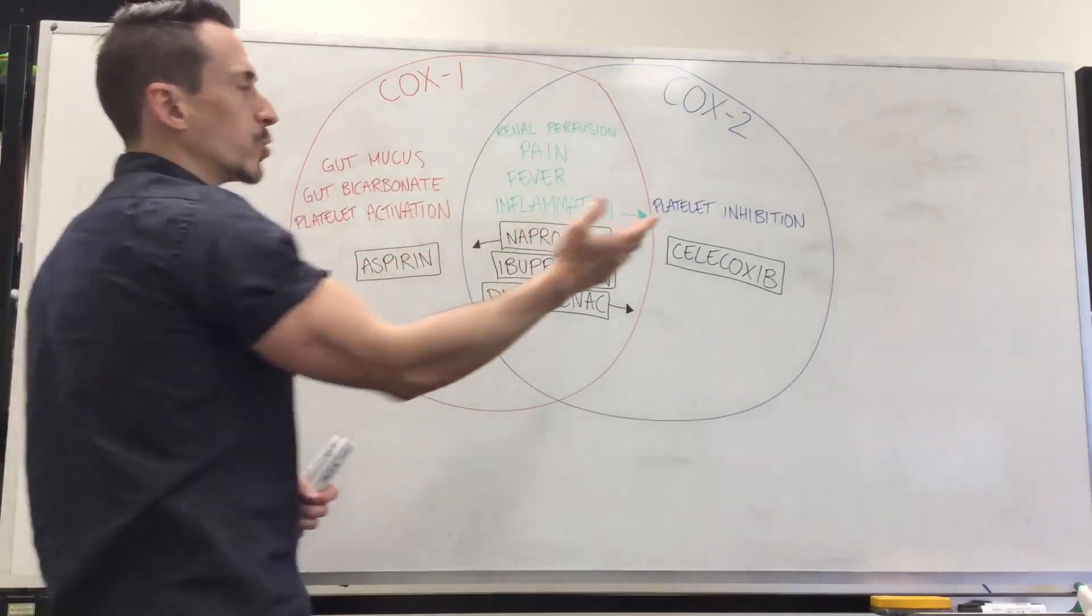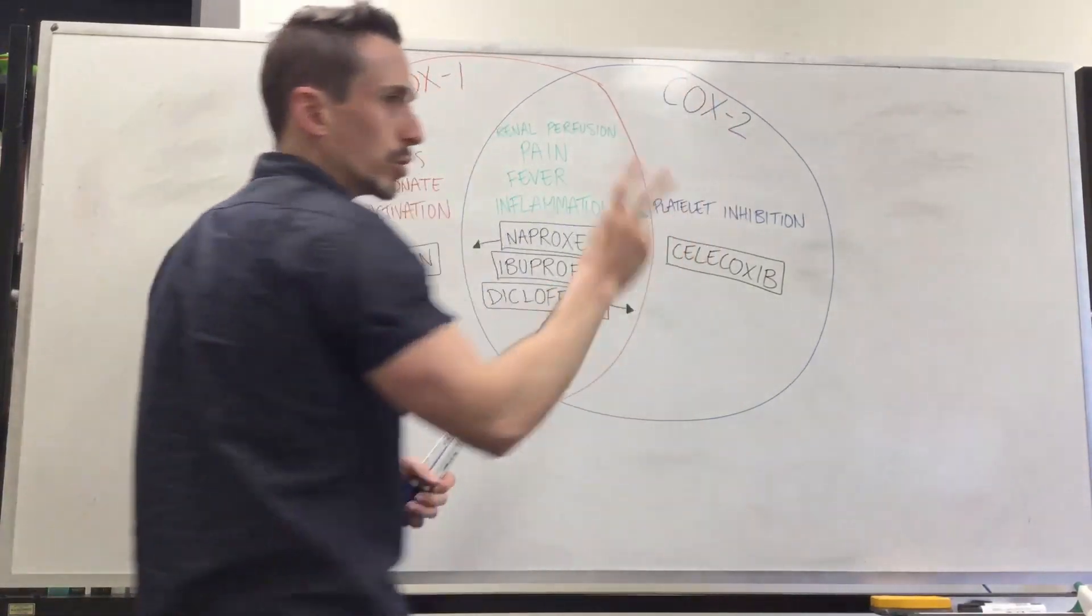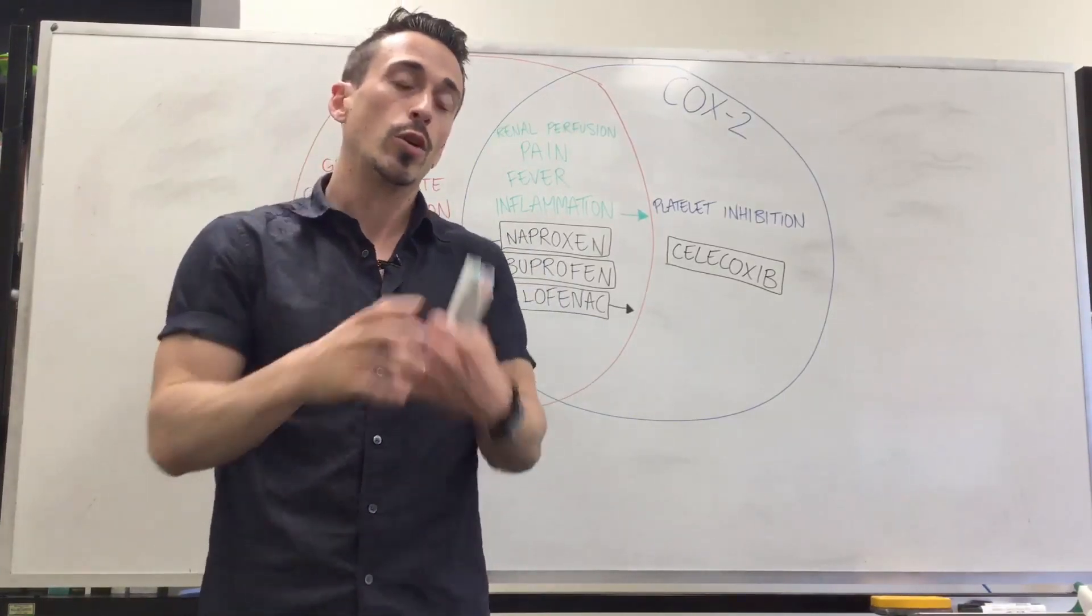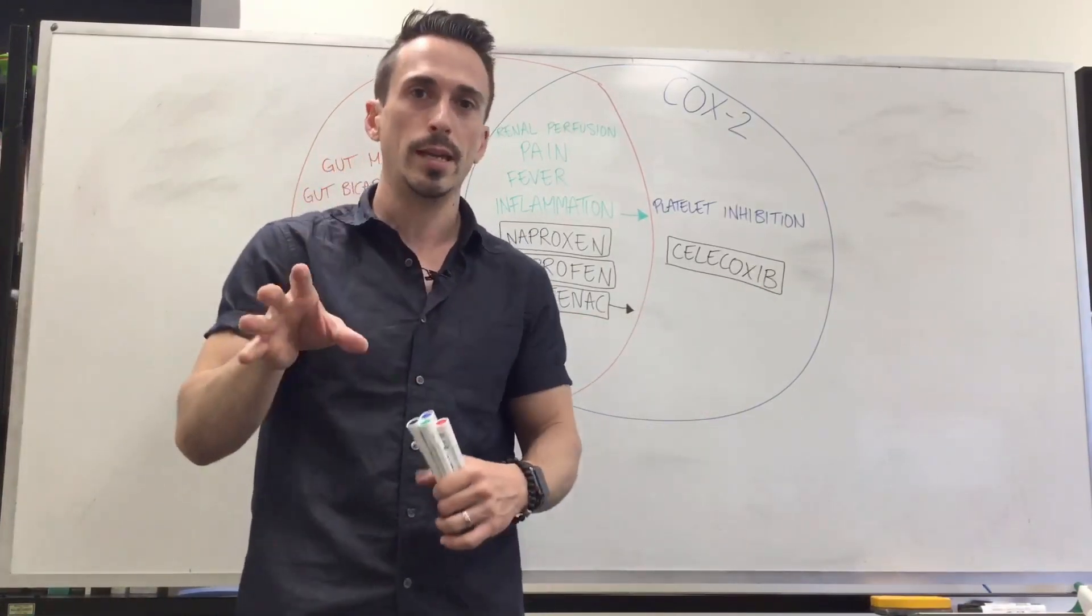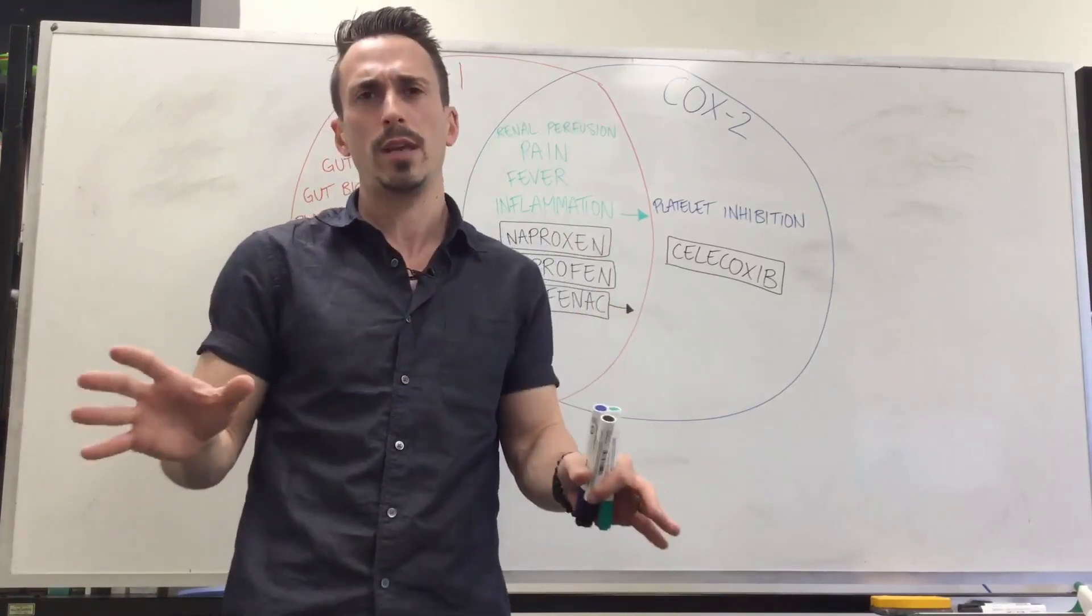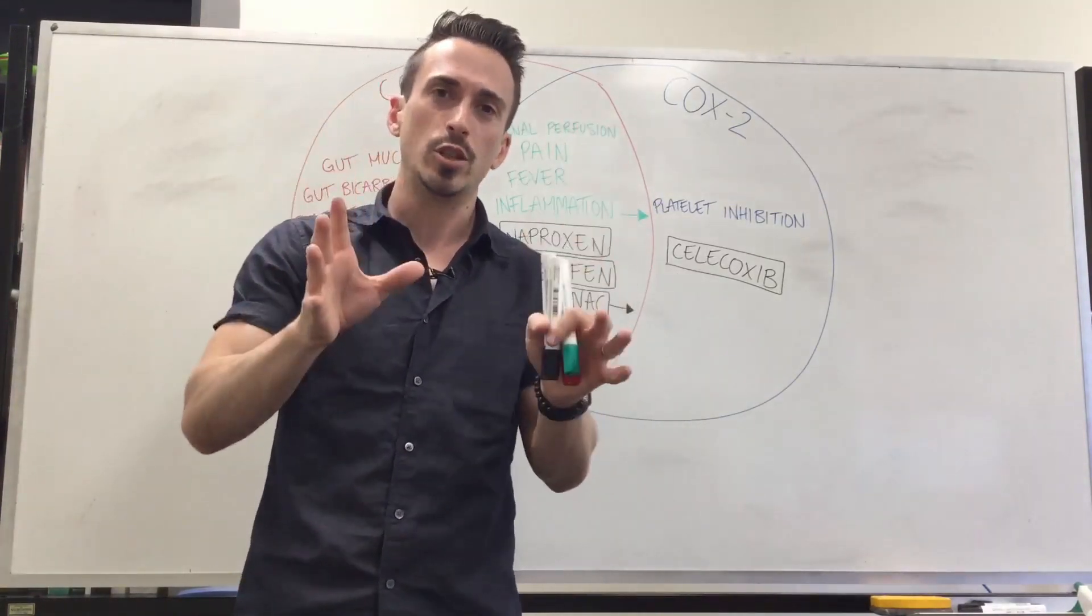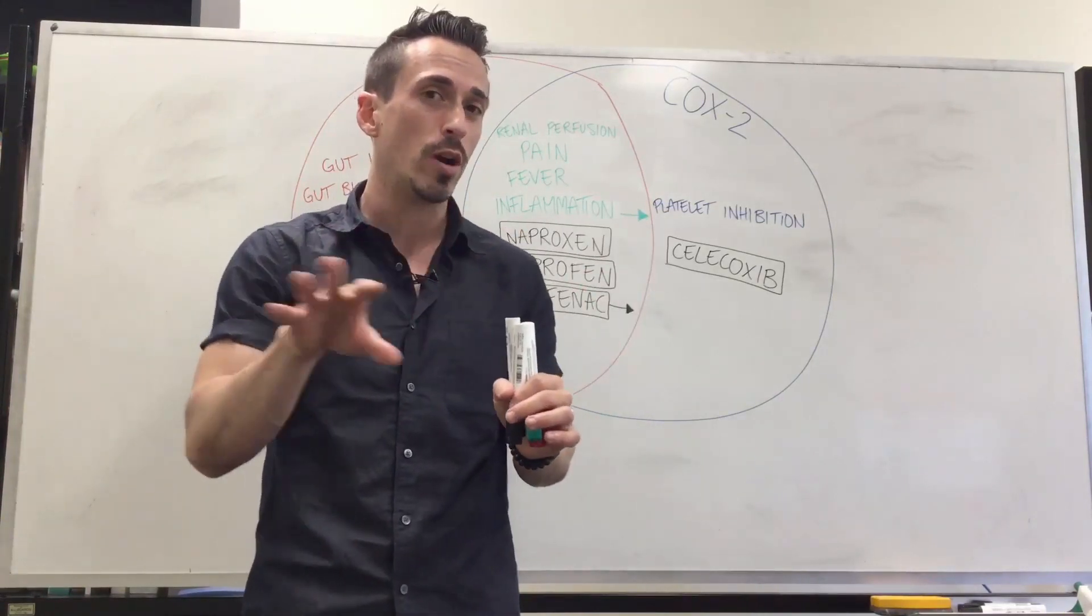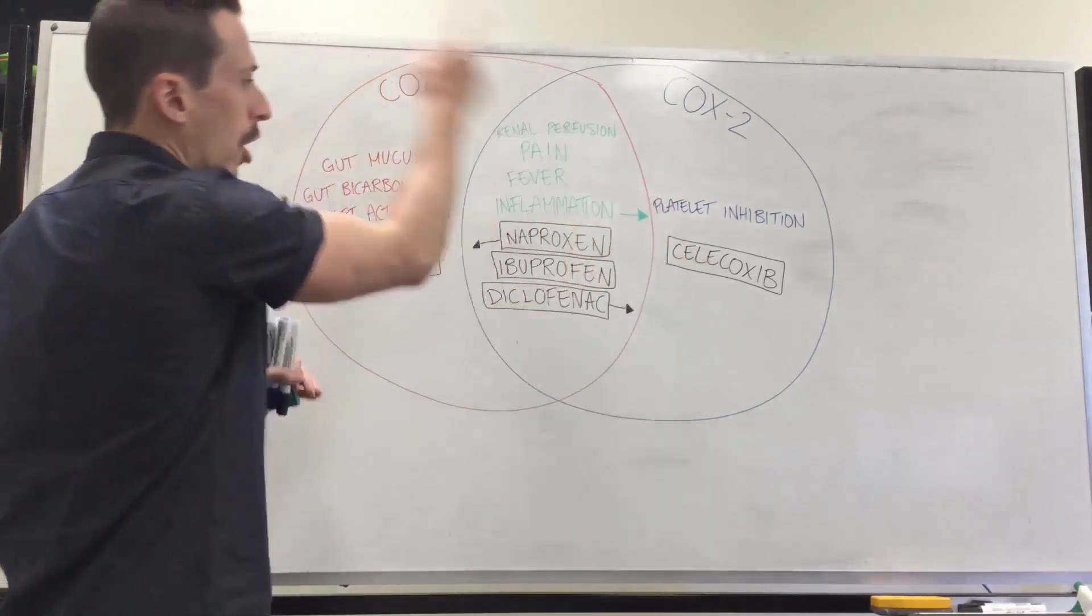Cyclooxygenase 1, known as COX-1, and cyclooxygenase 2, known as COX-2. What these enzymes do is they produce a chemical or a group of chemicals called prostaglandins. Now prostaglandins, they're everywhere in the body and they do a whole bunch of things, but some really important functions that are really important for you to understand when it comes to these drugs are outlined here on my Venn diagram.